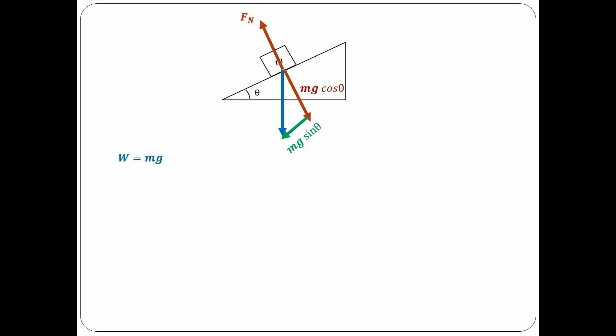It is important to understand that this angle is the same as the angle of inclination. Because the block is at rest, it means it is not accelerating in the upward or downward direction, so the block is in a state of equilibrium in the y direction. This means that the sum of forces in the y direction is equal to zero. Therefore, Fn is equal to Mg cosine theta.